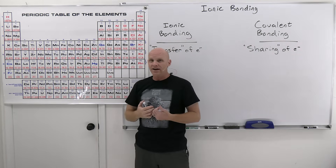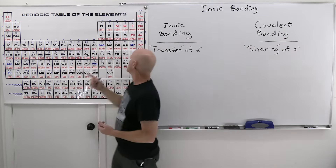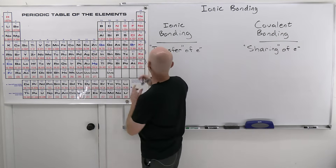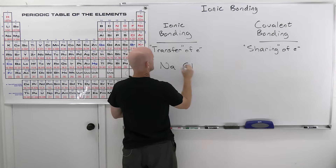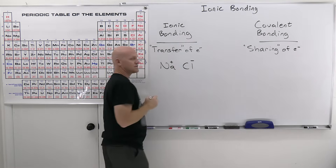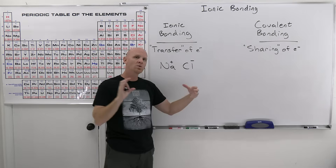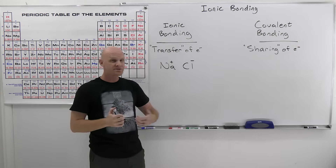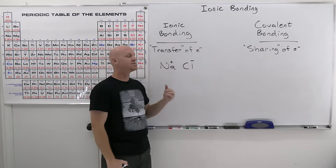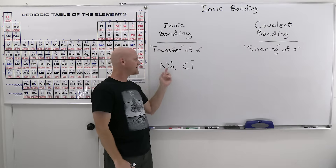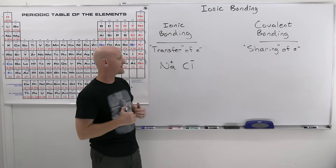That transfer of electrons leads to sodium having a positive charge and chlorine having a negative charge. As a result, you have the attraction of ions holding them together. So we have a transfer of electrons from the metal to the nonmetal, which gives you a cation and an anion that are attracted to each other, forming the ionic compound.